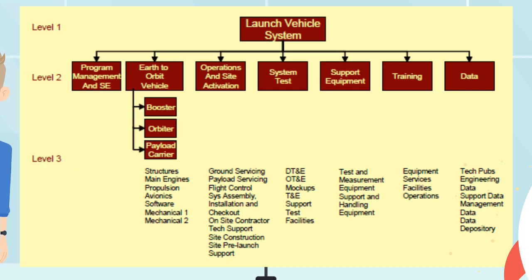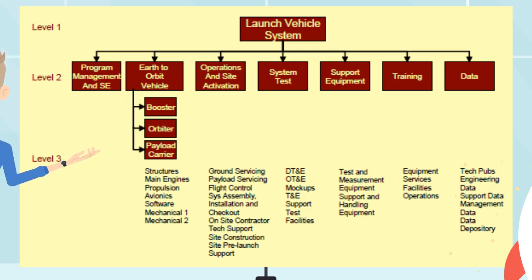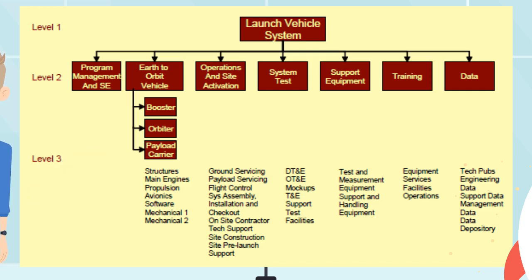A completed WBS can have 10 or more levels. The first three work breakdown structure levels are organized as: Level 1 – Overall System, Level 2 – Major Elements, Level 3 – Subordinate Components.